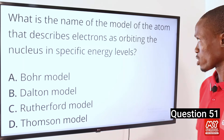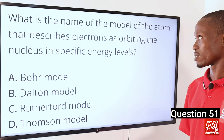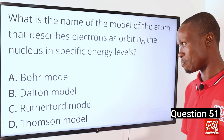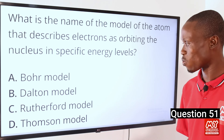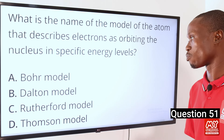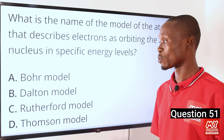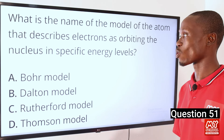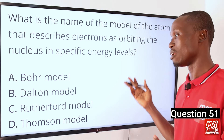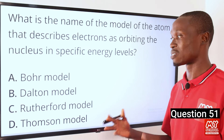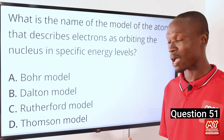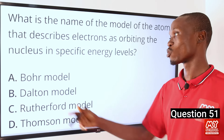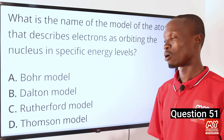Question 51. What is the name of the model of the atom that describes electrons as orbiting the nucleus in specific energy levels? Options: A, Bohr model; B, Dalton model; C, Rutherford model; D, Thomson model. The answer is option A, the Bohr model. It is the Bohr model that described electrons as orbiting the nucleus in specific energy levels. Although Rutherford also contributed, Bohr provided a better explanation, and so this model was accredited to him.